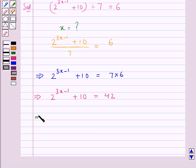This further implies 2 to the power 3x minus 1 is equal to 42 minus 10. This further implies 2 to the power 3x minus 1 is equal to 32.